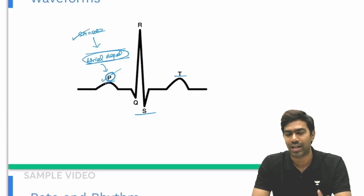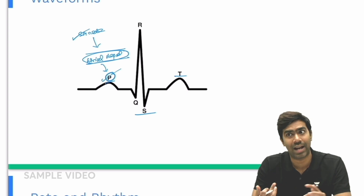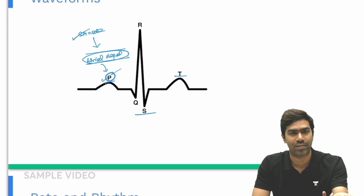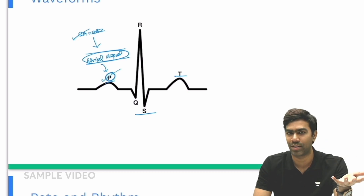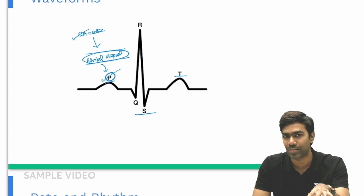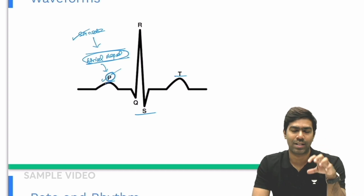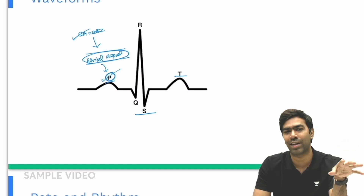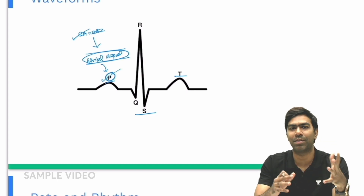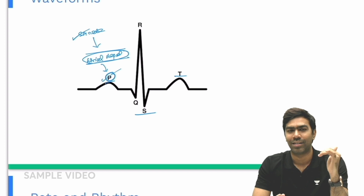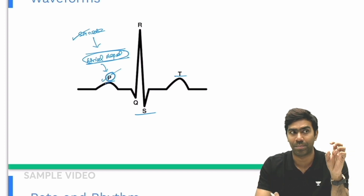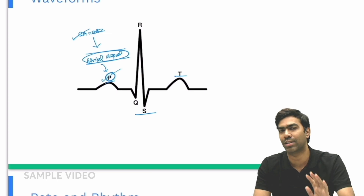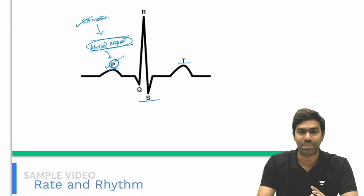The clinical implications of this are important. There are situations where atrial depolarization occurs but the SA node is silent — for example in AVNRT, a re-entrant tachycardia in the AV node that produces atrial depolarization, yet the SA node is silent, but you still get a P wave. Conversely, in atrial standstill, the atrium does not depolarize at all — the SA node is still firing, but you get no P wave. The best example is hyperkalemia, where there is complete atrial paralysis: the atrium cannot depolarize, so no P wave is produced despite SA nodal activity.